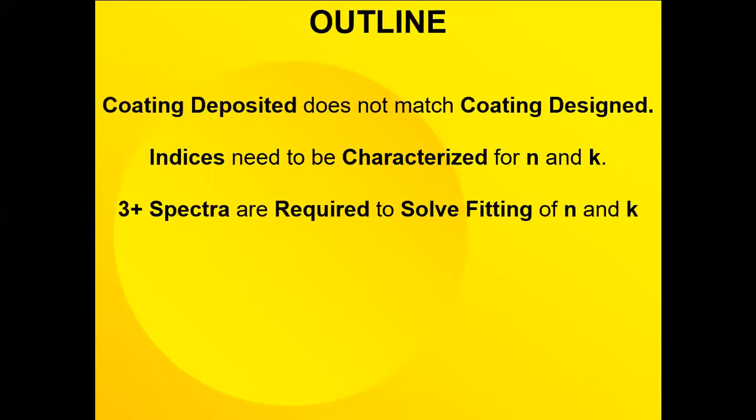We need three spectra to solve the fitting of N and K. But there's a possibility or general probability that there are two different solutions, just like there are two different solutions to the square root of a number. So we need a fourth spectra to sort out which is the real solution and which is the false solution.